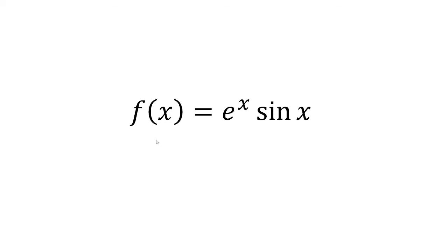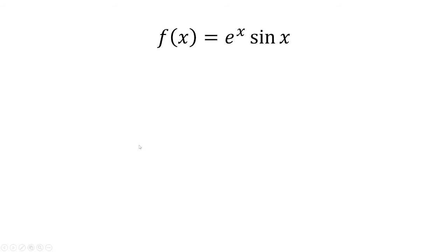We're given f of x is equal to e to the x times sine of x. Let's find the derivative of this. For the derivative, we're going to use a product rule.